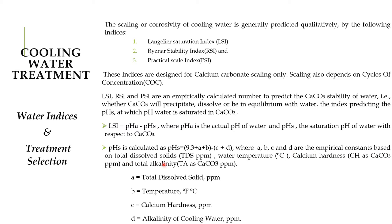The empirical constants are based on: total dissolved solids in ppm (A), water temperature in degrees Celsius or Fahrenheit (B), calcium hardness as CaCO3 in ppm (C), and total alkalinity as CaCO3 in ppm (D).